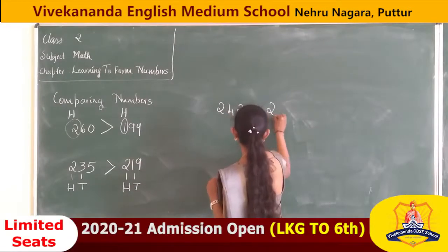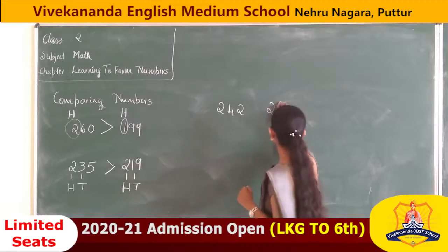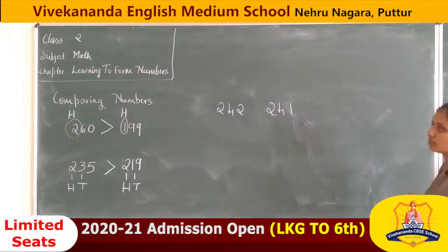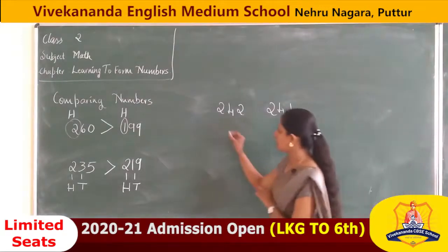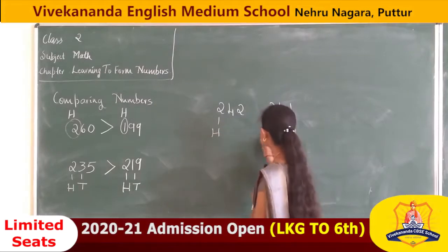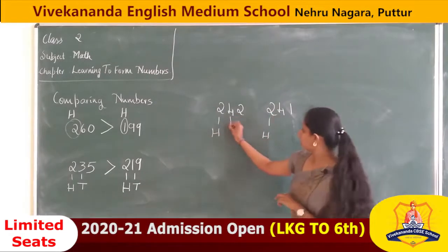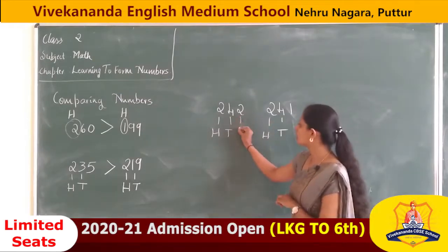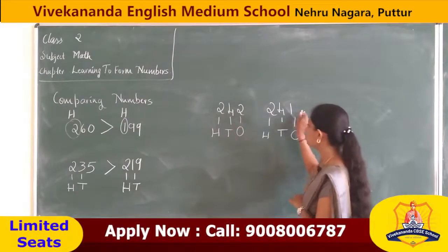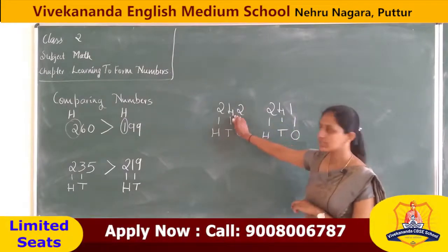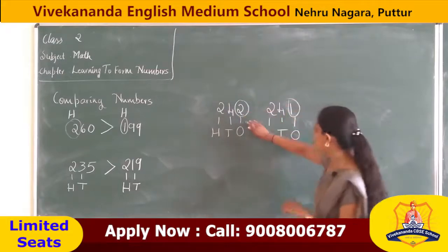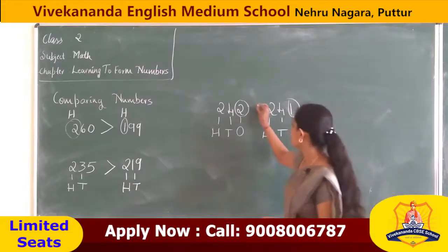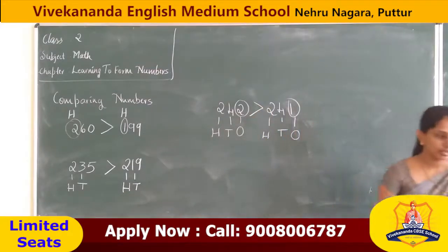Last one: 242 and 241. The hundreds place is the same; the tens place is also the same. So we look at the ones place — 2 is greater than 1. Therefore 242 is greater than 241.